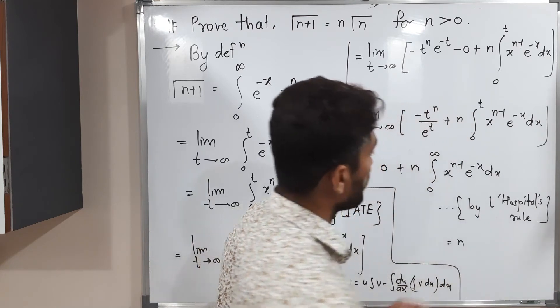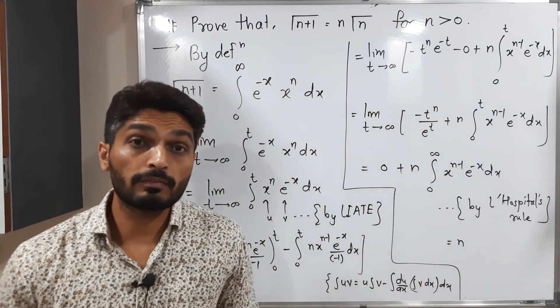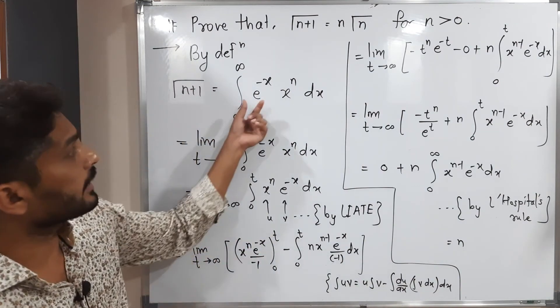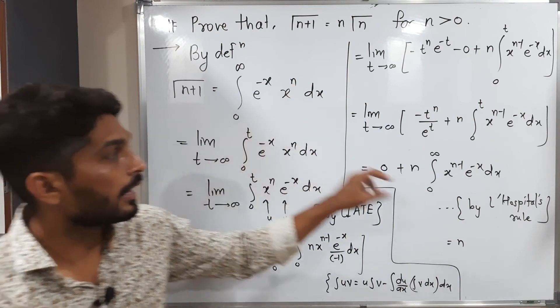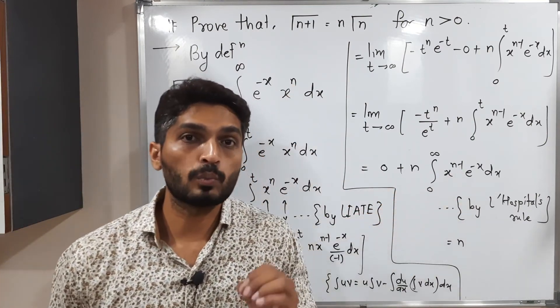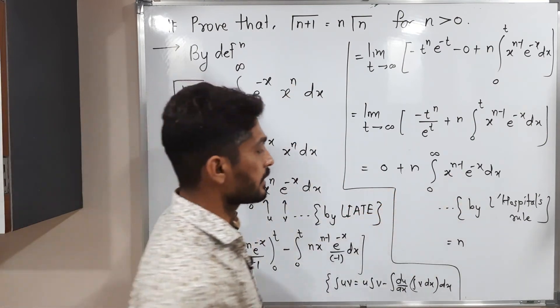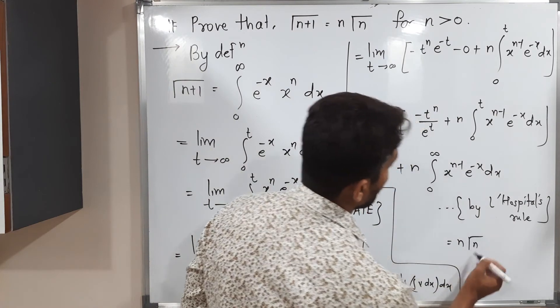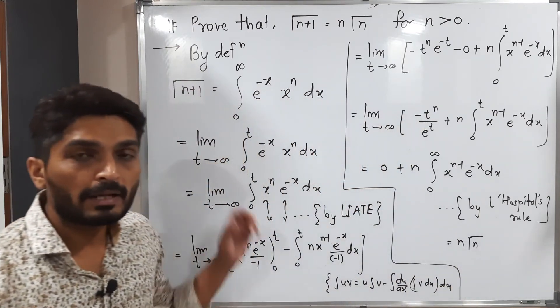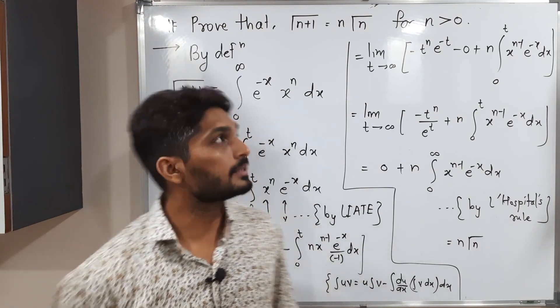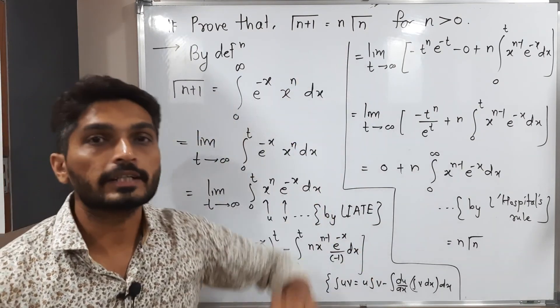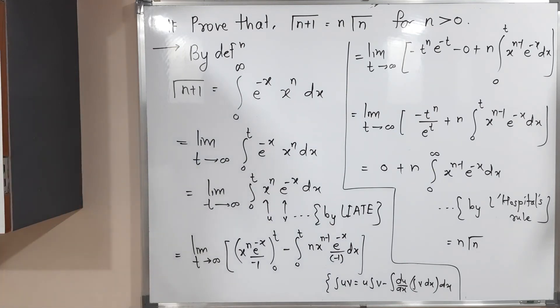So this is equal to n. But did you notice this is a definition of the gamma function again, which we started with the same, but that time we had power n, and here we have power n minus 1. So that's why this is the definition of gamma n. So we started with gamma n plus 1 and finally we got that is nothing but n gamma n. So this is the required right-hand side. So in this way we prove this result. We stop here. Thank you. Bye.